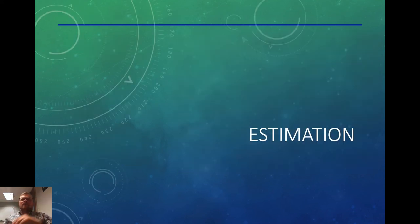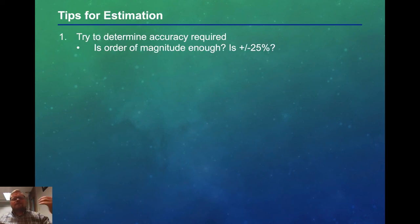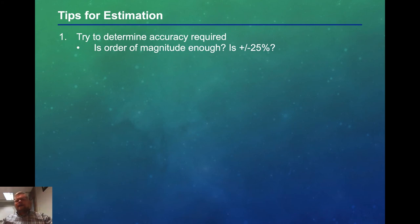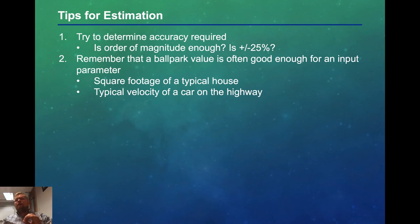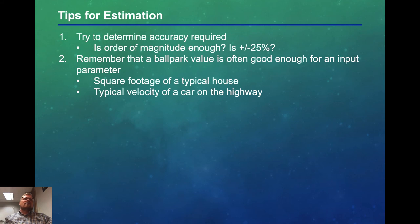Now for a quick rundown on what estimation is and how we can do it. First, determine the accuracy required — is an order of magnitude enough, within a factor of 10? Or is plus or minus 25% good enough? In my graduate program, there were many times I literally wrote on a napkin at a restaurant estimating the result of an experiment, which we could then test in the lab. Remember that a ballpark value is often good enough for an input parameter. The square footage of a typical house might be 1,200 square feet in Rhode Island or 2,000 square feet in the Midwest — ballpark is good enough. The typical velocity of a car on the highway — you can make an assumption about the speed limit and what people actually drive, and that ballpark value is often good enough.